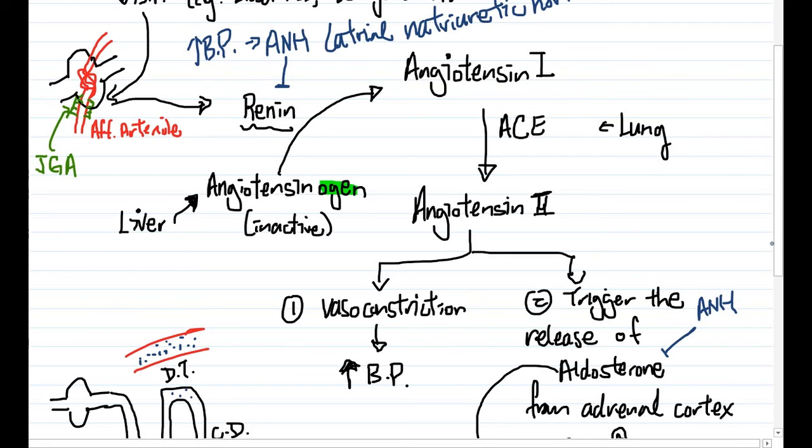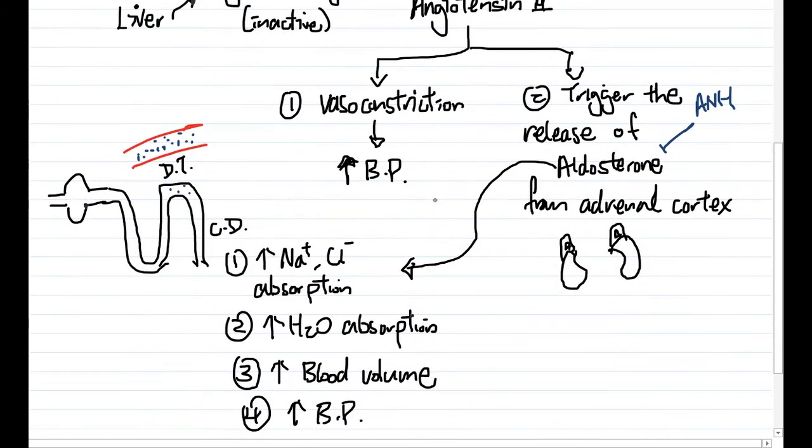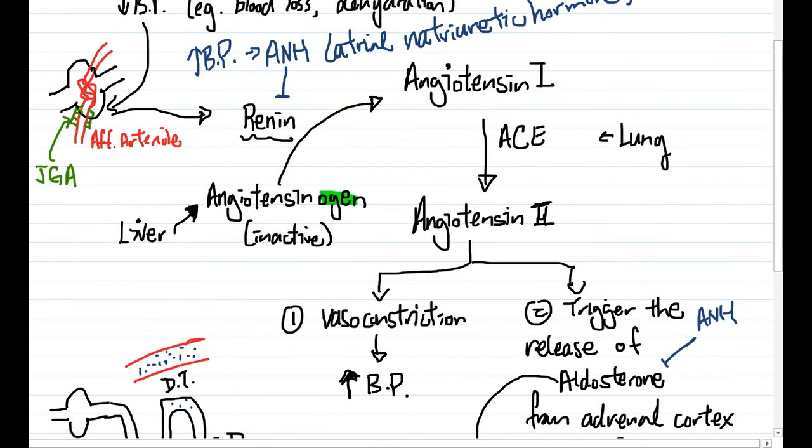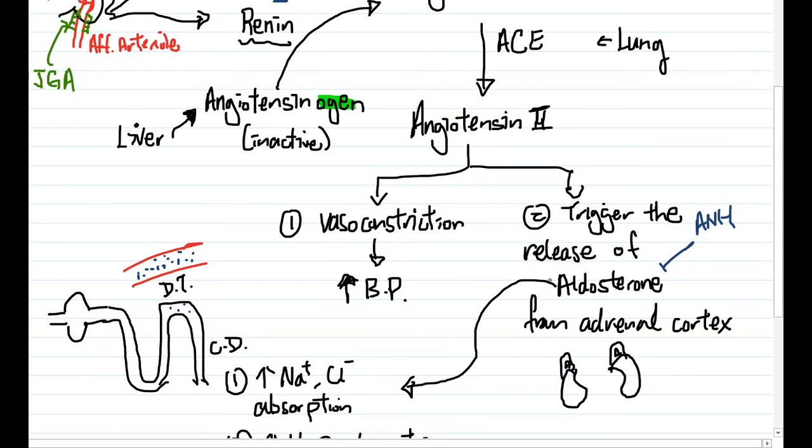ANH actually has a second function. It's also capable of suppressing the release of aldosterone. By suppressing the release of aldosterone, you are not going to be increasing the absorption of NaCl at the distal tubule and collecting duct, which is why you will end up having a higher level of sodium and chloride in your urine. And that's what the name of the hormone suggests. It is a natriuretic. It increases the amount of sodium and chloride in your urine. So this is a normal balance. You have two antagonistic hormones working against each other to maintain homeostasis for blood pressure.